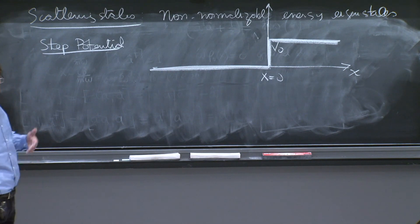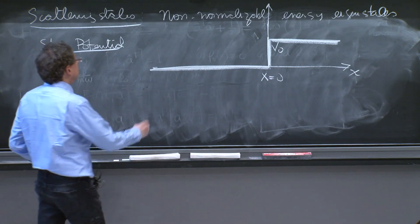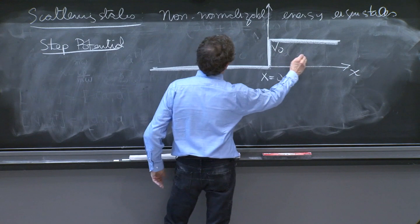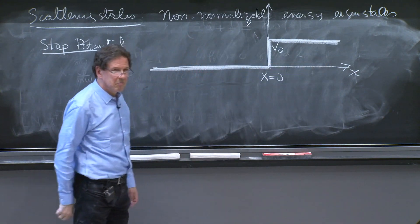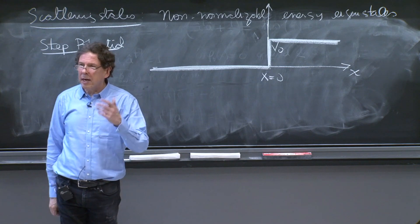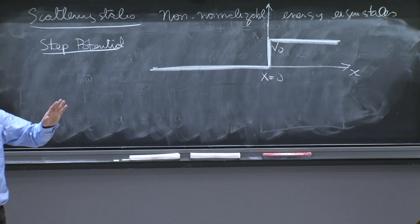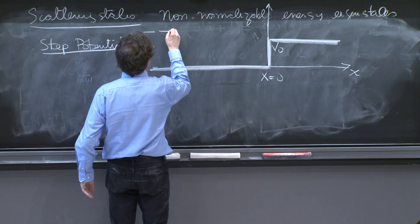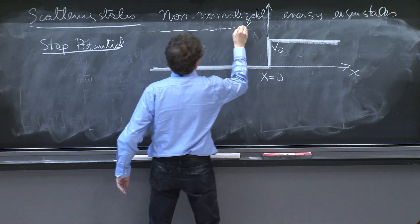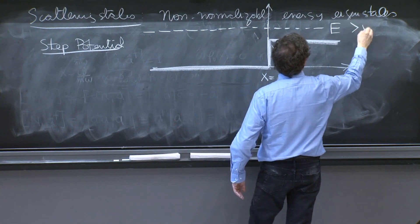So we have actually qualitatively two possibilities. The energy may be less than v0, might be greater than v0. It would look like you have to solve the problem two times. Happily, we'll solve one. It then let the other happen by analytic continuation. So here is the energy. I'll take the energy greater than v0.